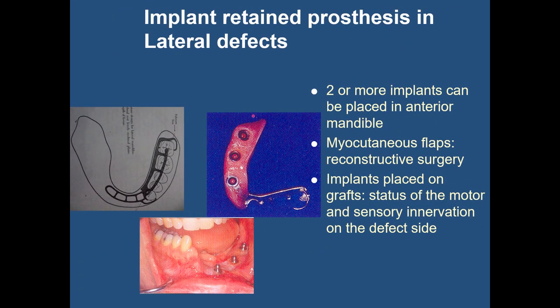Implants can also be placed in lateral defects if the bone volume permits and the anterior mandible is edentulous; two or more implants can be placed in this region to improve retention, stability, and support of the RPD. Myocutaneous flaps have been introduced and help reconstruction of defects with high predictability. Implants can be placed into either free grafts or free flaps. The factors that determine whether implants can be placed depend on the status of motor and sensory innervation on the defect side, as the lingual and hypoglossal nerves are frequently sacrificed during resection of tongue or lateral floor of the mouth tumors.